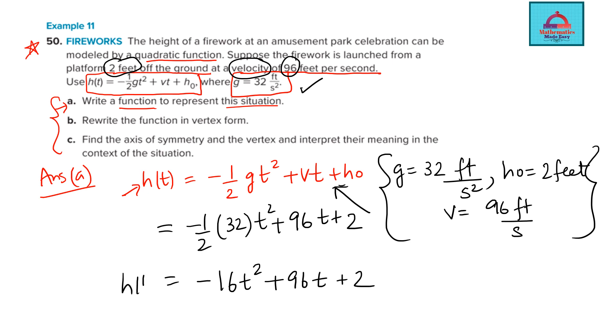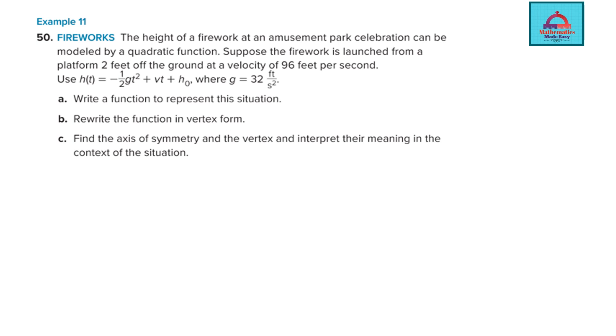So this completes the first part of the question where you have to write the function for h(t), simplify it and substitute the values. So let's do part b and c in the next slide. So from the first question, we got the value. This is already done from answer of part a.